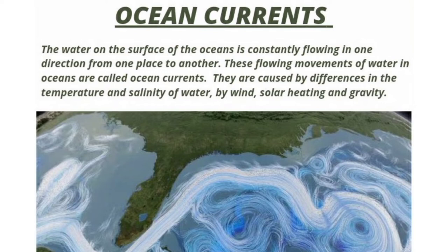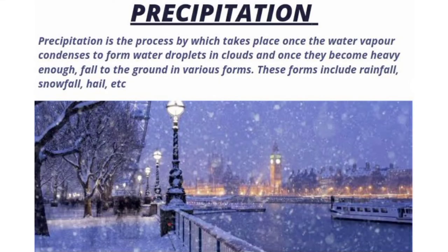Precipitation. Precipitation is the process by which, once the water vapor condenses to form water droplets in clouds and once they become heavy enough, they fall to the ground in various forms. These forms include rainfall, snowfall, hail, etc.